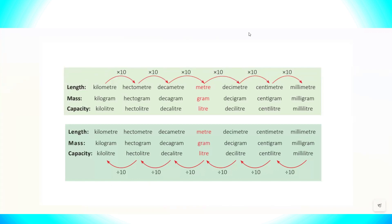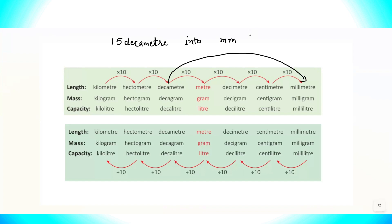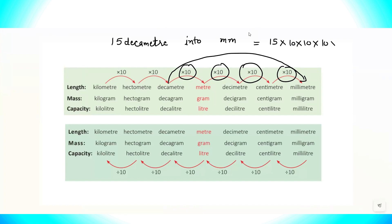Let's take another example. Suppose I'm converting 15 decameters into millimeters. Going from decameter to millimeter on the table, I count the tens in between — there are four. So I write 15 multiplied by 10 four times, giving four zeros. That means 15 decameters equals 150,000 millimeters.